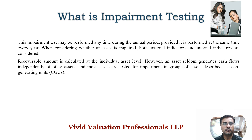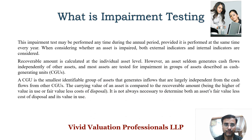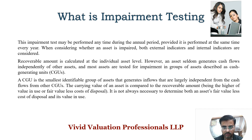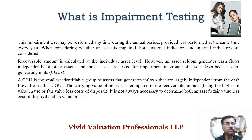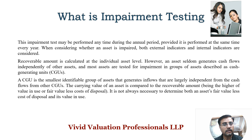Recoverable amount is calculated at the individual asset level; however, an asset may not generate cash flows independently of other assets. Most assets are tested for impairment at the level of a cash generating unit (CGU). A CGU is essentially a cash-generating unit — suppose you carry a hotel resort business: the hotel is one CGU, and the restaurant or bar you also run is another CGU. A CGU is the smallest identifiable group of assets that generates inflows largely independent from cash flows from other CGUs.